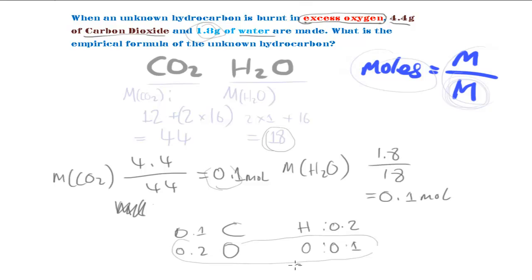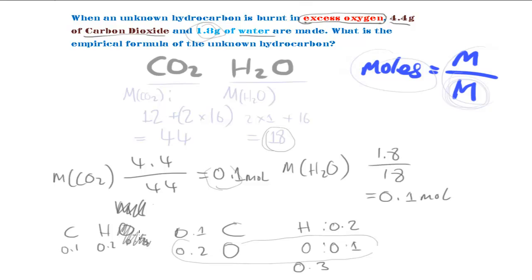Adding the oxygen from both molecules gives us 0.3 moles of oxygen total. So the ratio for carbon, hydrogen, and oxygen is 0.1 : 0.2 : 0.3. However, since this is a hydrocarbon, it doesn't contain any oxygen — that oxygen came from the excess oxygen supply — so we remove it from our ratio.